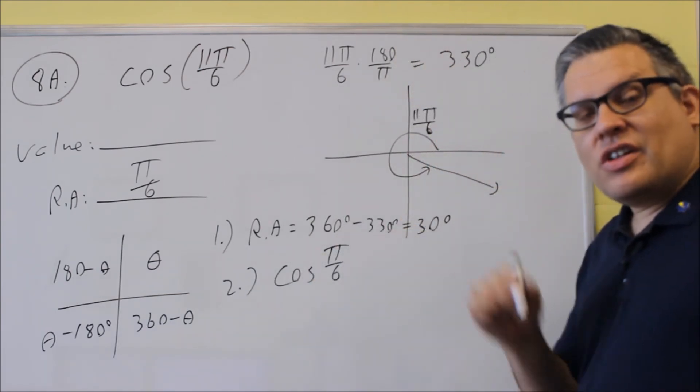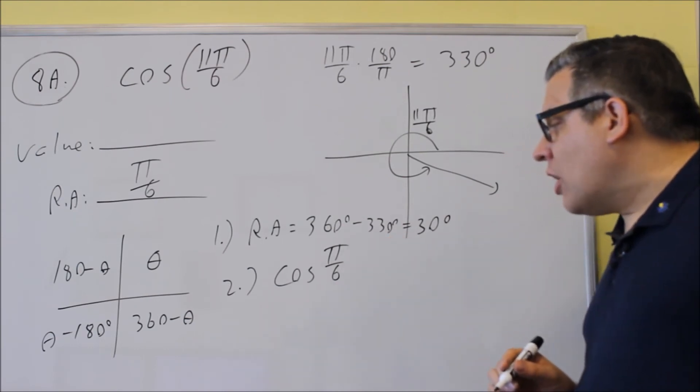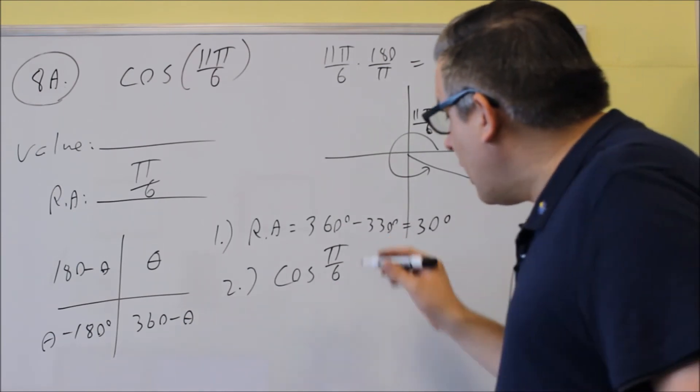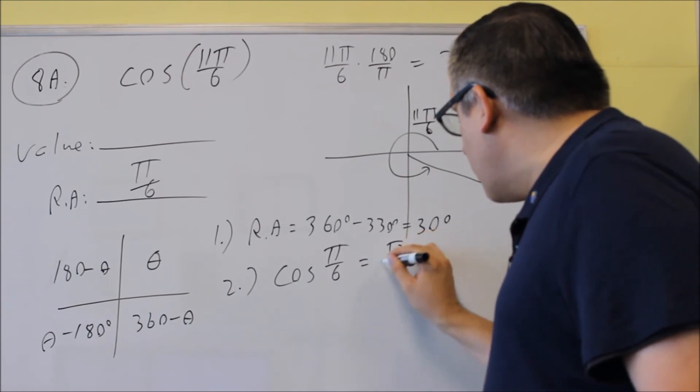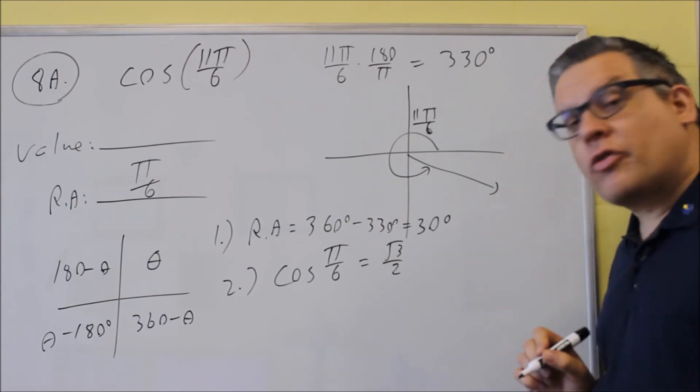This will allow you to use either a table or unit circle. So if we do that one, you're going to get square root of 3 over 2 as the value from the table. That's cosine 30 degrees, square root of 3 over 2.